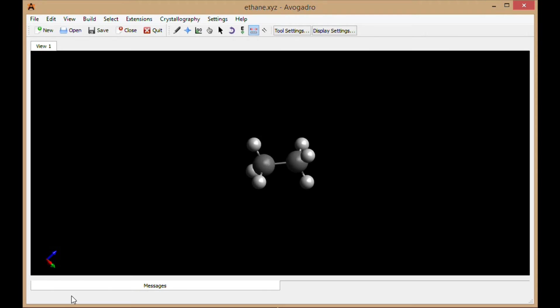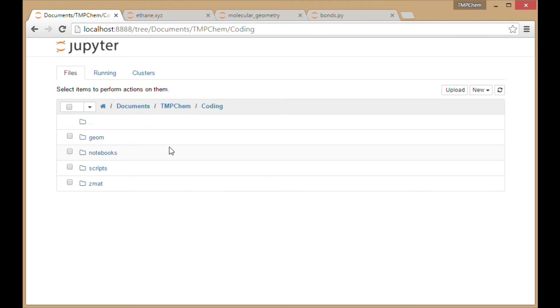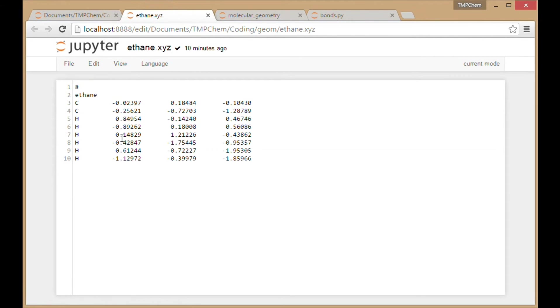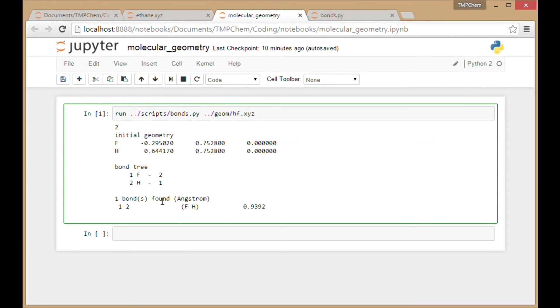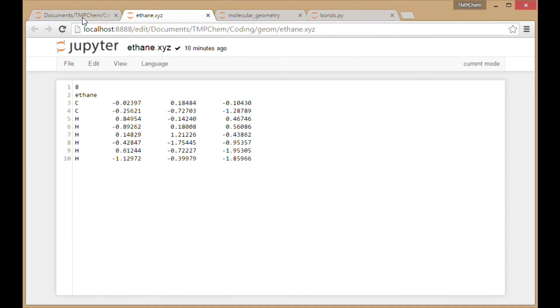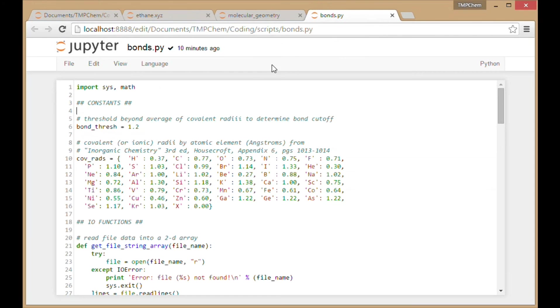Let's go to our Jupyter notebook here. I've got this directory here called coding, with four sub-directories. One with geometries where I have my XYZ file. One with IPython or Jupyter notebooks, which is what I used in the previous video to execute that Hello World script. I've got a directory called scripts, where I've got a Python script which is going to compute our bond tree and bond lengths.